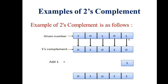So for 10101, performing one's complement: this 1 will be converted into 0, the next 0 will be converted into 1, then this 1 will be converted into 0, the next 0 will be converted into 1, and the last 1 will be converted into 0.